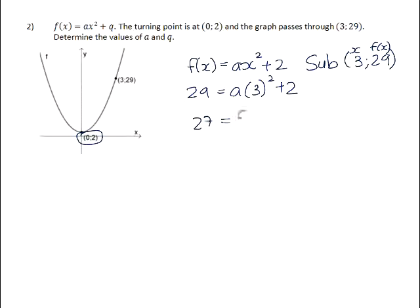Subtract 2 from both sides, and then divide both sides by 9. So therefore, your graph will be f of x equals 3x squared plus 2.